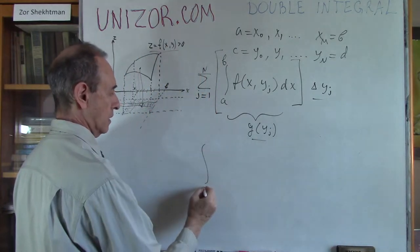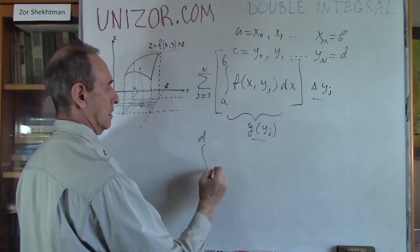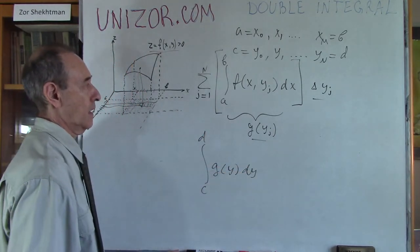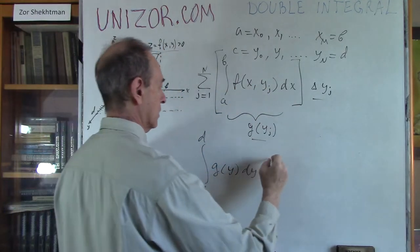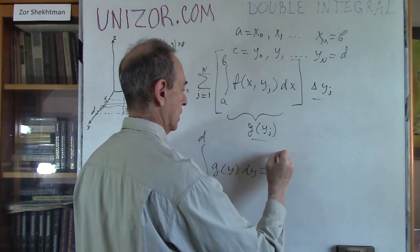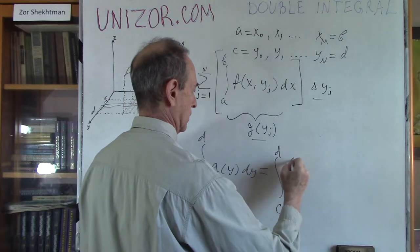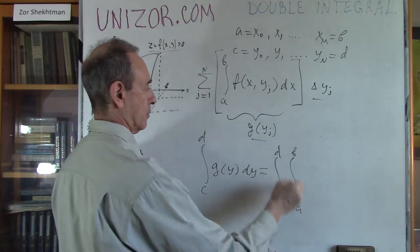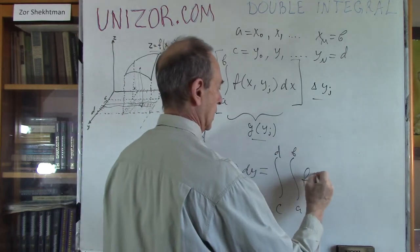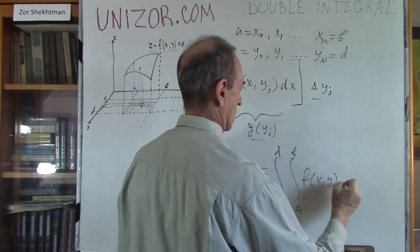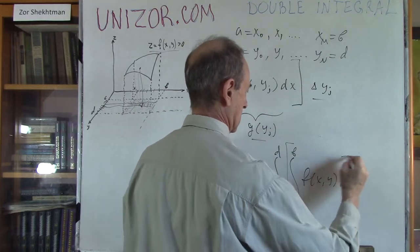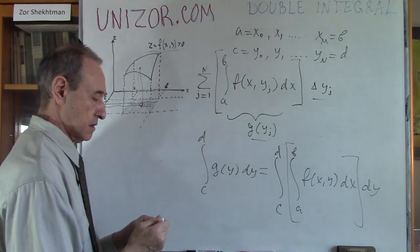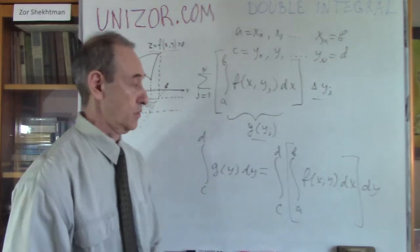And as n goes to infinity and Δy goes to zero, that is again an integral — this time by y from c to d of g(y) dy. Or, in expanded notation: the external integral from c to d, and the internal integral from a to b, of f(x, y) dx dy. And that is the definition of the double integral.